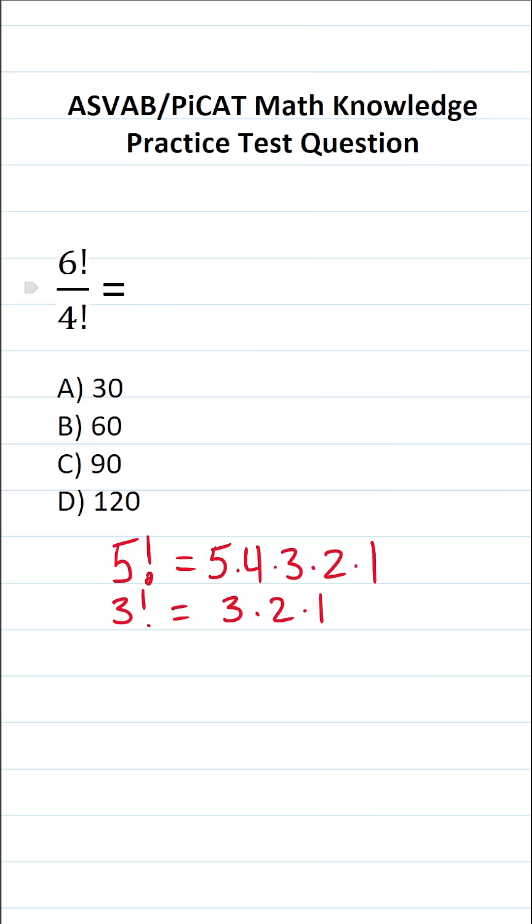So what is 6 factorial? 6 factorial is 6 times 5 times 4 times 3 times 2 times 1. What is 4 factorial? It's 4 times 3 times 2 times 1.